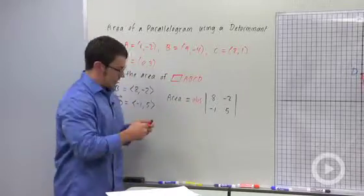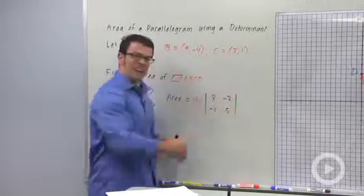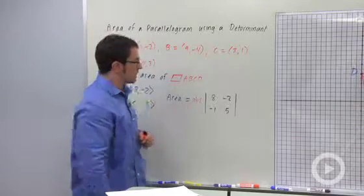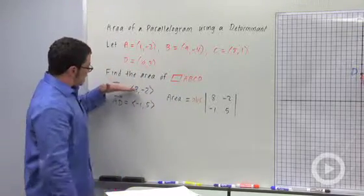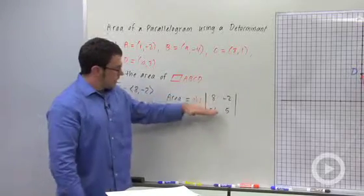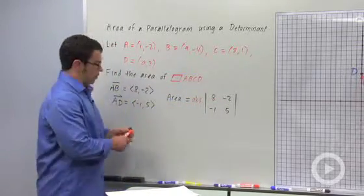Now I'm going to write it that way because if I wrote the absolute value with vertical lines, it would be a little confusing with our notation for the determinant. But again, you can enter these vectors in either order as long as you take the absolute value afterwards.